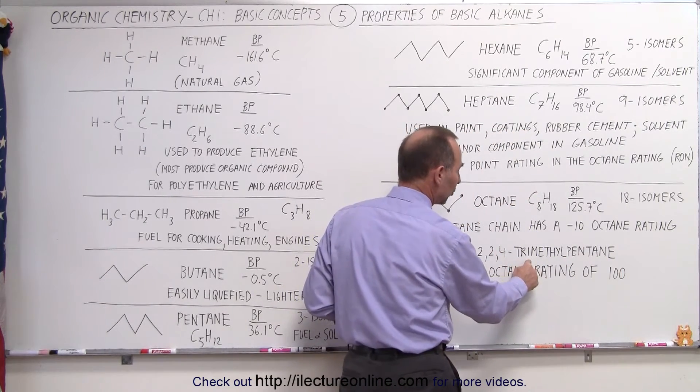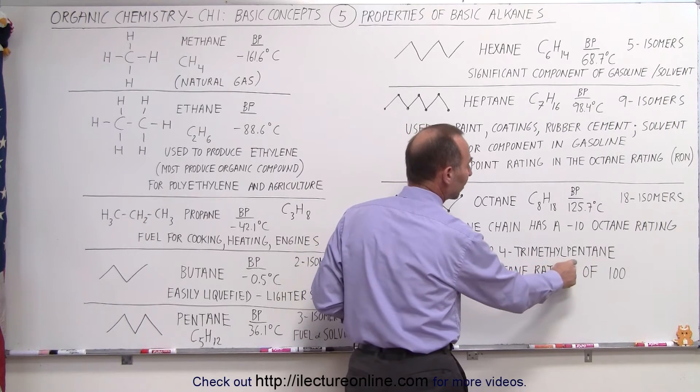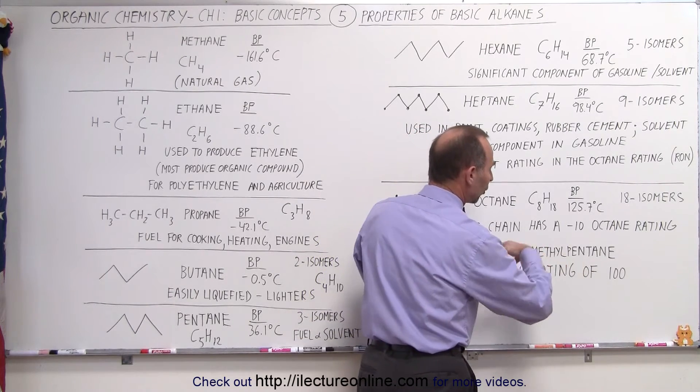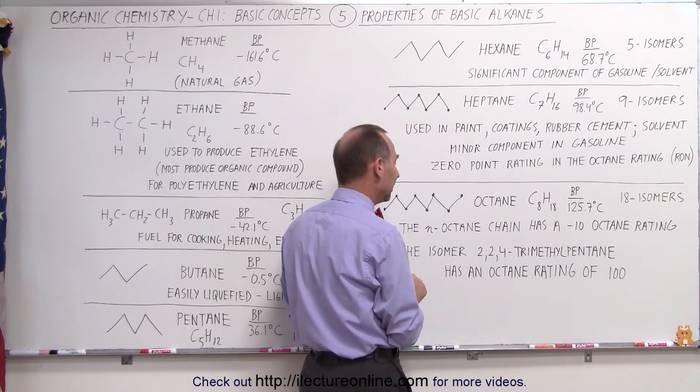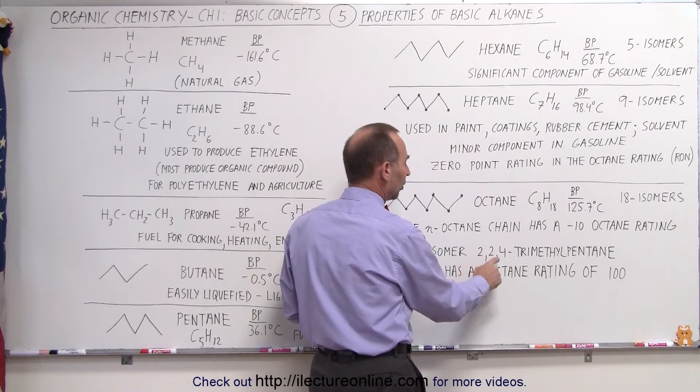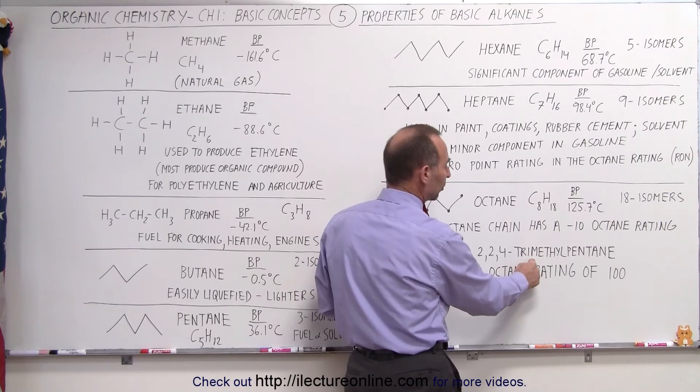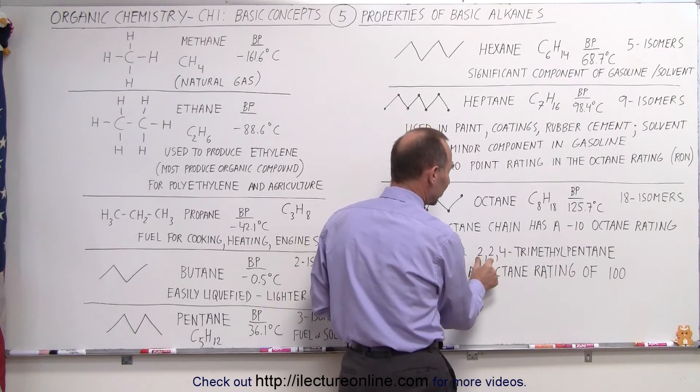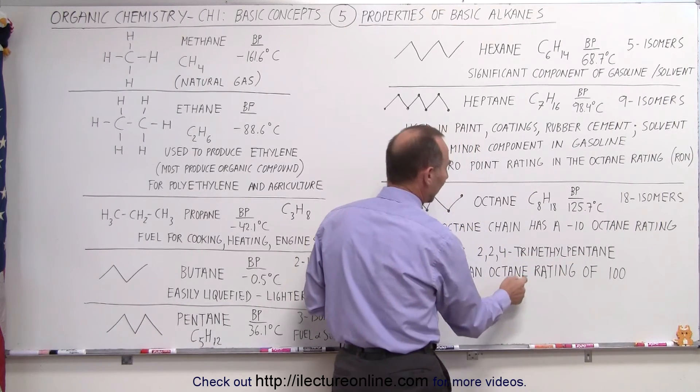So three functional groups each containing a carbon attached to a five carbon chain that's a total of eight carbons therefore it's an isomer of octane. Notice where they're attached.